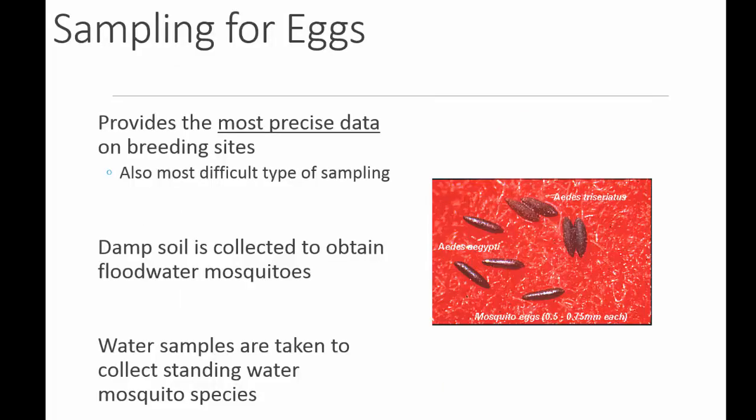Sampling for eggs provides the most precise data on breeding sites, but it's also the most difficult type of sampling. There are a couple of different ways to sample for eggs. One is a damp soil collection, and you do that to obtain floodwater mosquitoes, and you can take water samples to collect standing water mosquitoes.